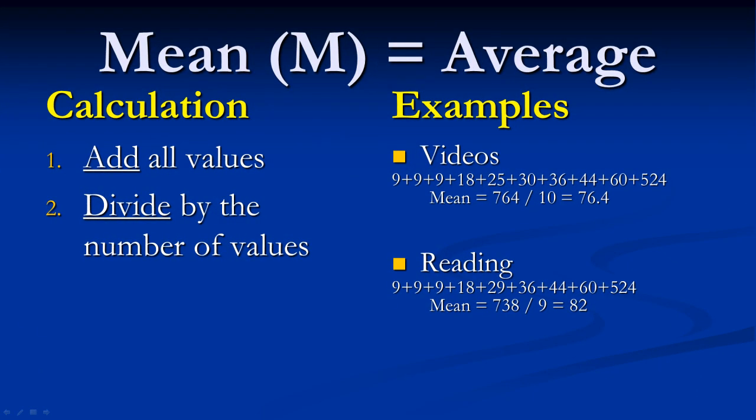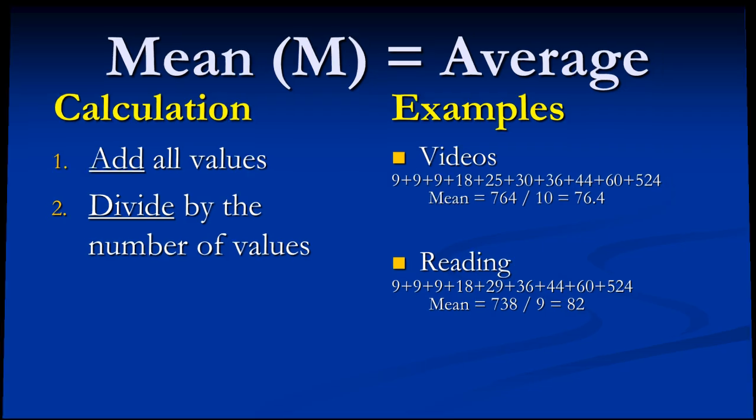You may remember how to calculate averages from math class. To calculate the mean or average of a group of numbers, first add all the numbers, then divide by the number of values. Many programs automatically calculate averages for you. However, it is still important to know how they are calculated in order to understand how they work.